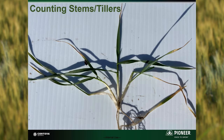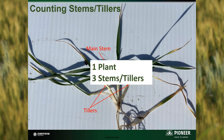The wheat plant at this stage will have a main stem and tillers. In this picture, there is one main stem and two tillers present. We want to count all of the stems that are likely to produce a head and contribute to yield. There is one plant with three stems.